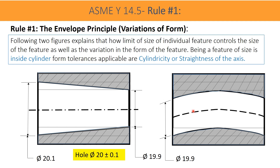This cylindricity value is completely within the limits of the size difference. The second figure shows a hole of size 19.9, well within the size limits at its minimum size. But this hole is not straight — it is bent. This is a straightness error of the cylinder axis, and this straightness error is not more than the size limits of the hole. Therefore, the limit of form error is the limit of the size. It is agreed that when an individual feature of size is specified with size limits, these limits control size variation as well as form errors — and that is called Rule 1 or the Envelope Principle.